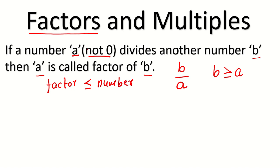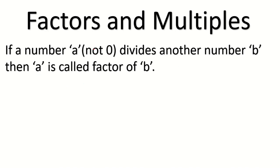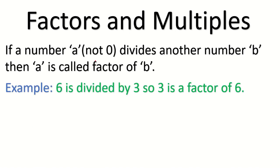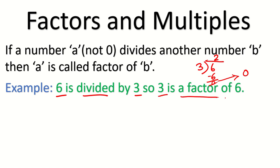Always. Factor cannot be bigger than the number. For example, 6 is divided by 3 — if you divide 6 by 3 you get quotient 2. Division here means the remainder should be completely 0. So 3 is a factor of 6, and you can see 3 is smaller than or equal to 6. Because factor is smaller than the number.